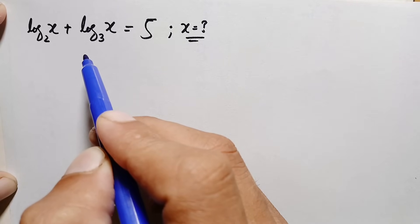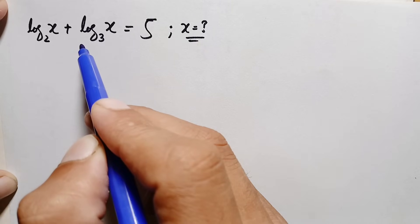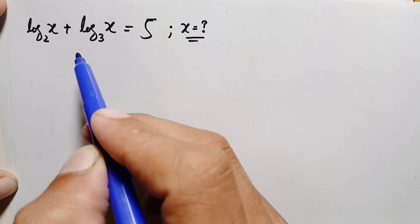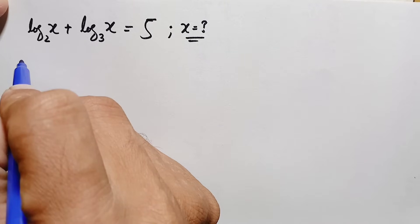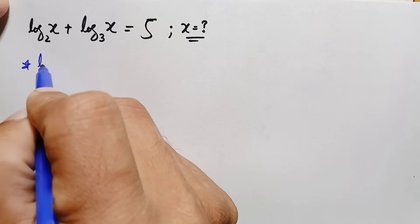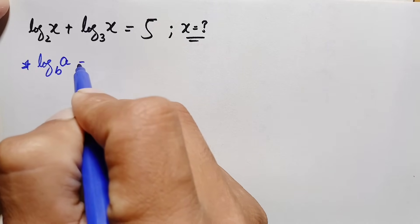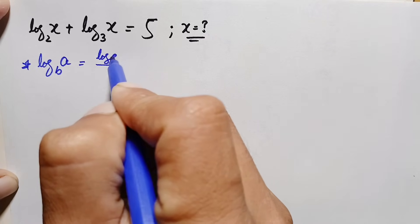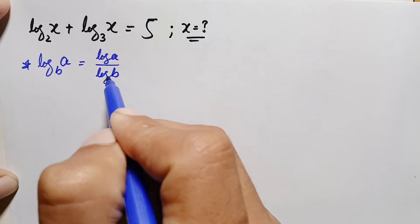Let's start our solution. First of all, in the left hand side, in these two expressions, we will use the change of base logarithm identity. We can write log of a in base b as log of a divided by log of b.